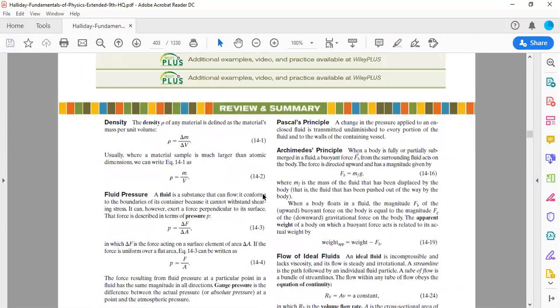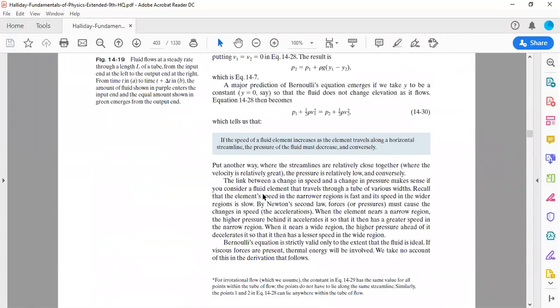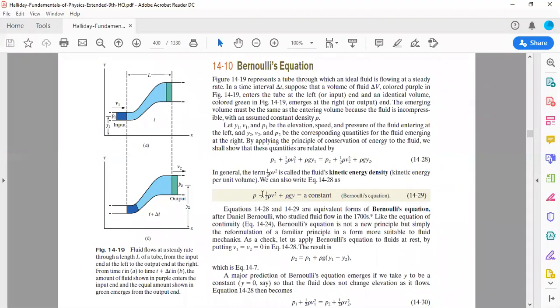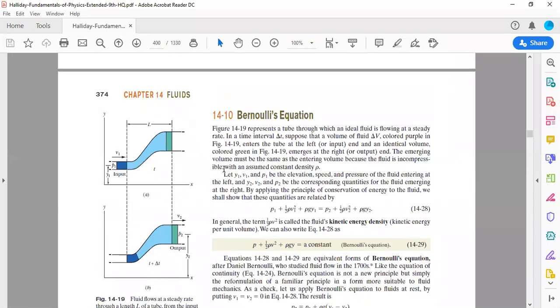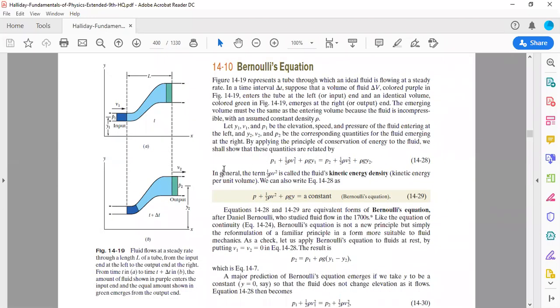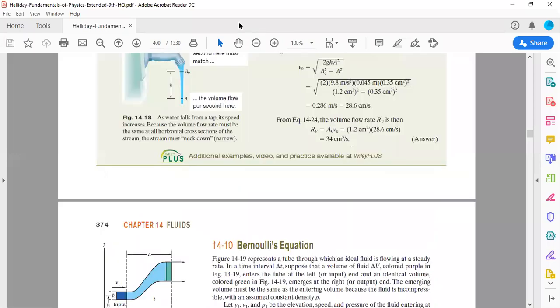This is the summary of the chapter. You have introduced the term density rather than mass, then fluid pressure instead of force, then pressure variation, how pressure changes depending upon the density and height elevation. Pascal's principle, Archimedes' principle, flow of ideal fluid, and then Bernoulli's equation. Bernoulli's equation is related to energy conservation of energy, and continuity equation is the conservation of mass. If you have any question, you may ask any time, not even after the class. You can contact me.